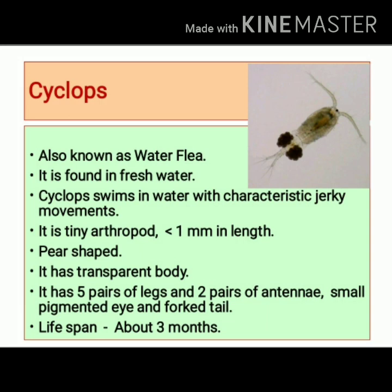Cyclops has 5 pairs of legs, 2 pairs of antennae, and a small pigmented eye. It also has a forked tail, meaning the tail is divided into 2 parts and appears like the letter Y. The lifespan of Cyclops is about 3 months.